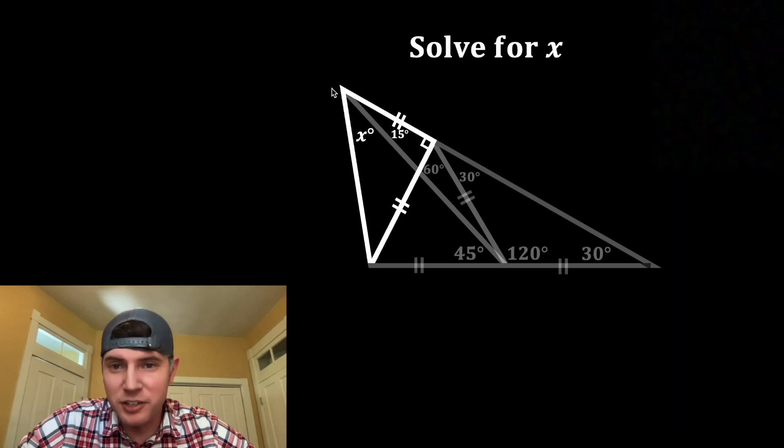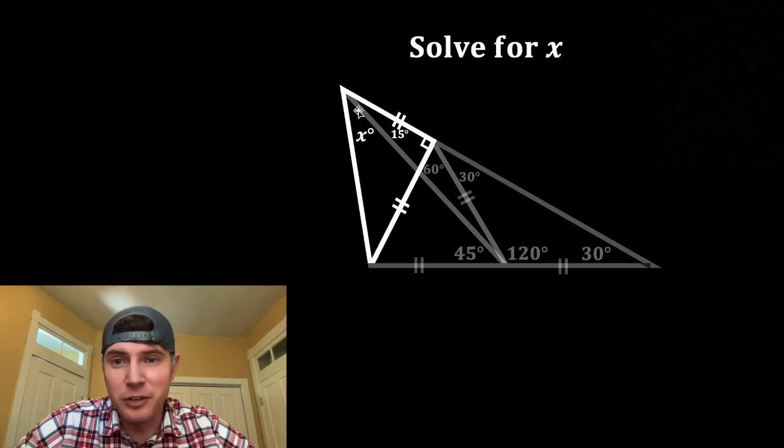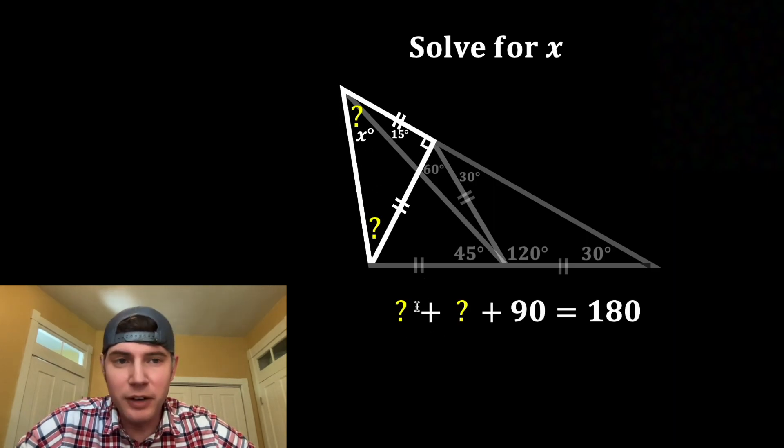For our next step, let's focus on this right triangle right here. It's also an isosceles triangle, so we know that these two angles are going to be congruent to each other. And if we add up all three of these angles, we can find out that each of these are a 45 degree angle.